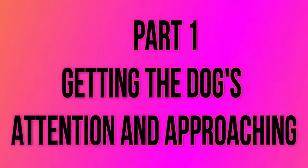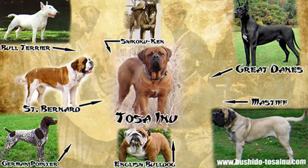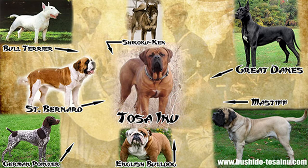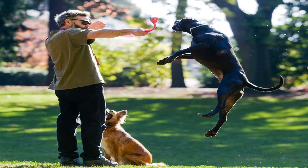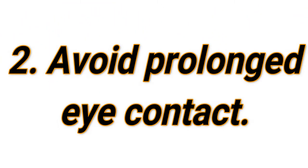Part one: getting the dog's attention and approaching. One: beware of aggressive dogs. An aggressive dog may show specific body language indicating its aggressiveness. This might include eyes that look larger than normal, lips pulled back to show teeth, ears positioned up and forward, a stiff tail possibly with a slow wag, hair standing along the back, and more. Pay attention for any signs of aggression and do not approach a dog that you think may be aggressive.